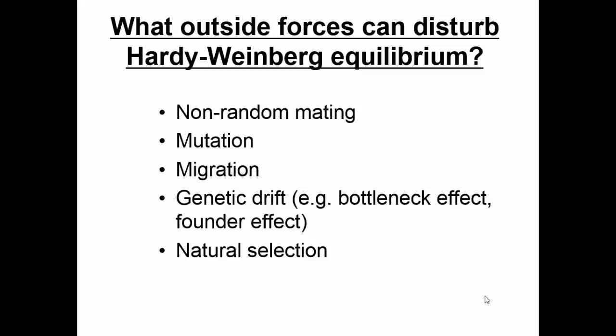Mutation and migration are straightforward. Non-random mating means the mating isn't completely random — random meaning you don't care about geography, ethnicity, race, or socioeconomic status. Human mating is hardly random, so it's very non-random, which is a disturbing force in Hardy-Weinberg equilibrium.